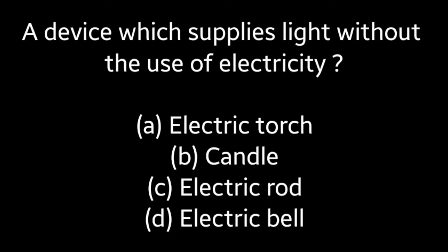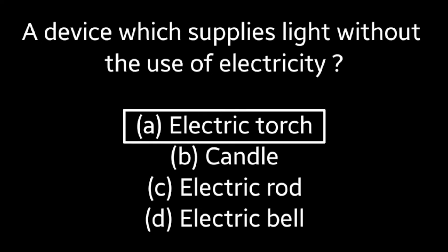Next question: A device which supplies light without the use of electricity is (A) Electric torch, (B) Candle, (C) Electric rod, (D) Electric bell. Answer is Option A: electric torch.